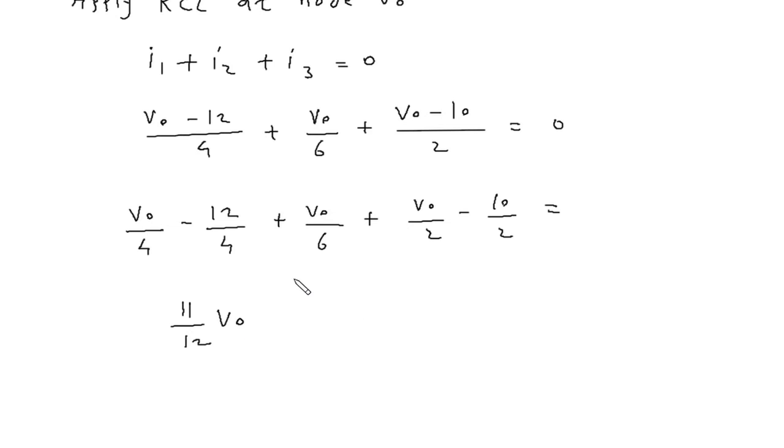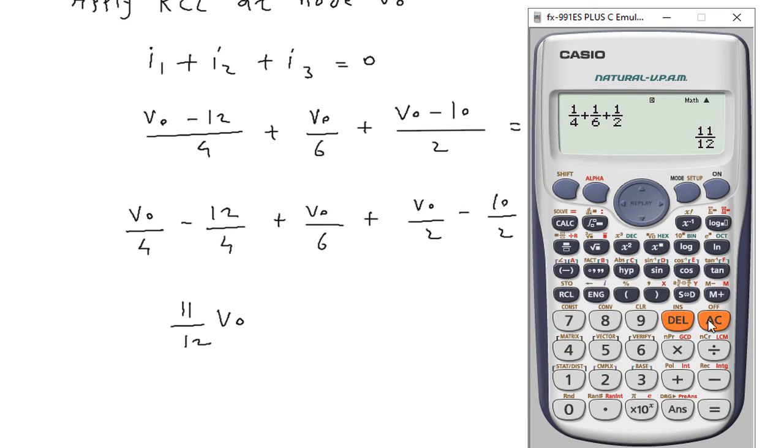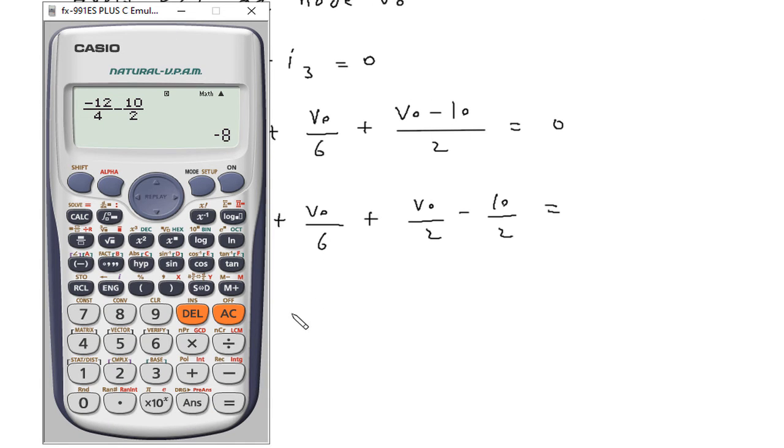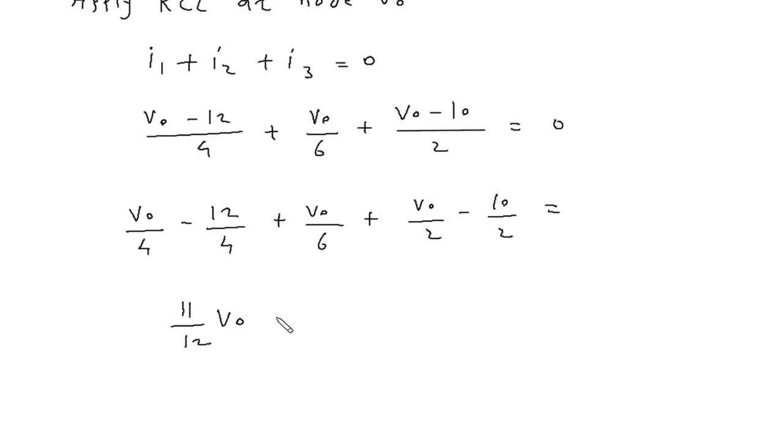This gives us 11 over 12 Vo minus 8 equals 0, so 11 over 12 Vo equals 8.